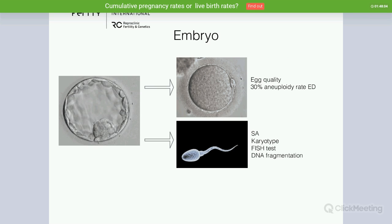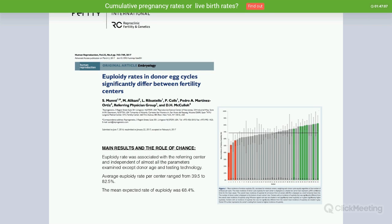When speaking about the embryo, even though we might have a good quality blastocyst in terms of morphology, that doesn't necessarily mean this embryo is euploid. Most eggs from an egg donor will be euploid — in general the euploid rate is around 70 percent — but there is still a 30 percent likelihood that eggs from a donor are not completely normal. We also have to rule out any alterations from the male side: semen analysis, genetic alterations in the karyotype, FISH test, or DNA fragmentation can all lead to decreased success rates.